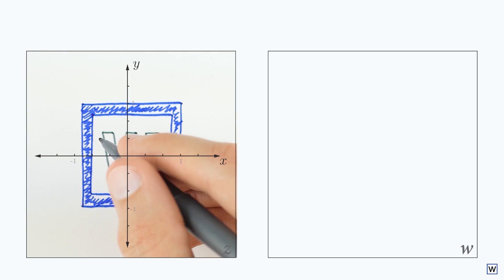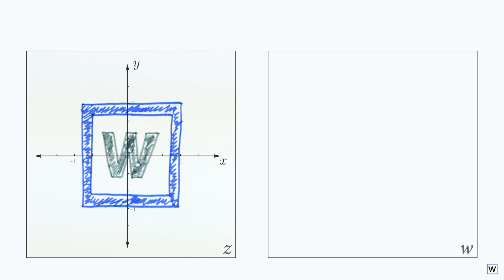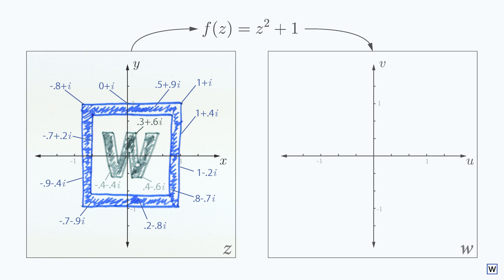To make this work, we'll assign each pixel in our input video a complex number that corresponds to its location on the complex plane. We can then let our code take care of the tedious work of moving each pixel to its new location as dictated by our function, z squared plus 1.